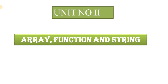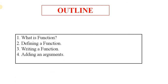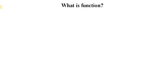Next is object as an associative array — without passing the index of an array, we pass strings as an index; this is called an associative array. In this lecture we start our new concept that is function. The outline of today's lecture is: first, what is meant by function; second, defining a function; third, writing a function; fourth, adding arguments; and last, the scope of variables and arguments.